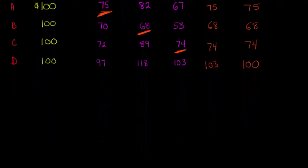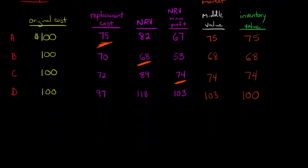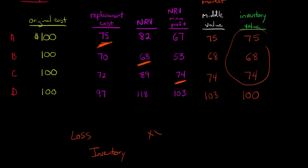In the cases where the inventory value is lower than cost, we're going to need to make a journal entry to write down the value of the inventory. We would debit a loss on decline of inventory, and then credit inventory to reduce the value of the asset. For example, in situation A it would be a write-down of $25 — the value is 75, we had it on the books at 100, so we debit a loss of 25 and credit inventory for 25.